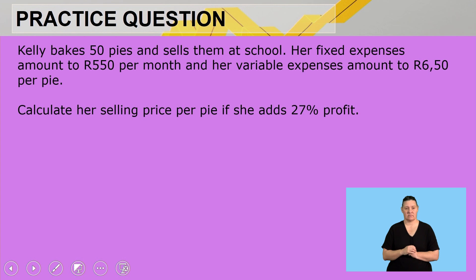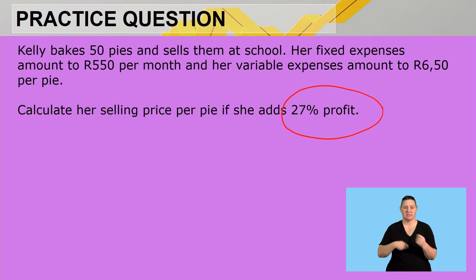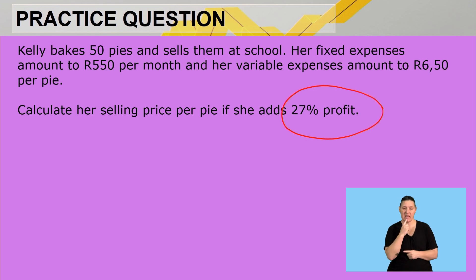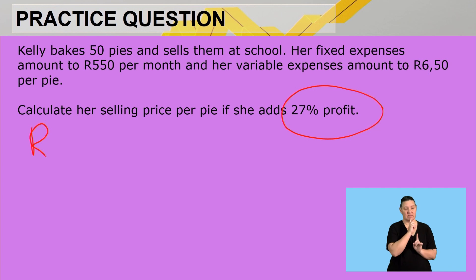Now she wants to add 27% profit. Kelly bakes 50 pies and sells them at school. Her fixed expenses amount to R550 per month and her variable expenses amount to R650 per pie. Calculate her selling price per pie if she adds 27% profit. From the previous answer, we know her cost price is R17.50.